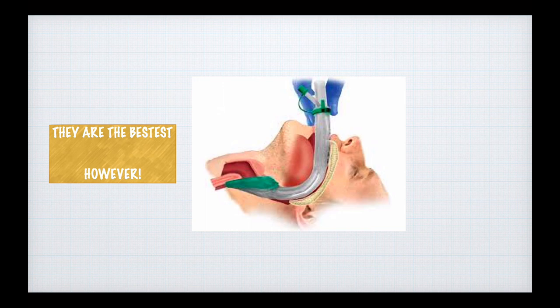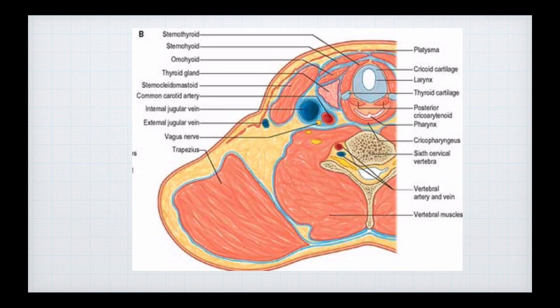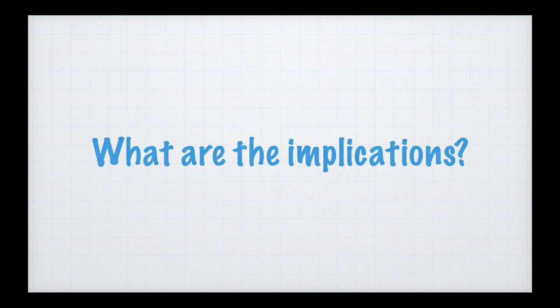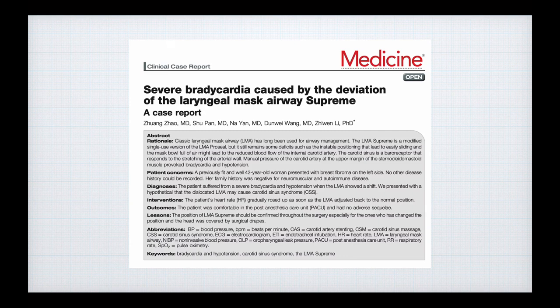But every now and then you come across articles that make you wonder. Although they're the best, sometimes you read something that makes you think. In the human body, every organ, vessel, or structure has a neighbor. Sometimes we forget that our LMA sits directly across the thyroid and the carotid sheath, which puts it in a critical area with a nerve that can get compressed and a blood vessel that can get compressed.